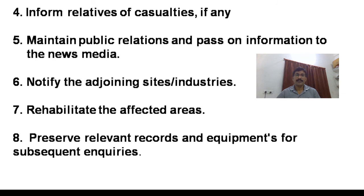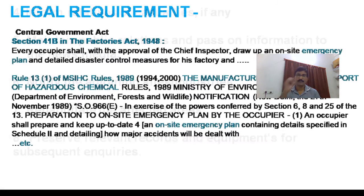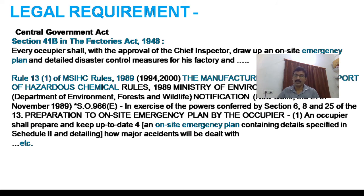7. Notify the adjoining sites or industries. 8. Rehabilitate the affected areas. 9. Preserve relevant records and equipment for subsequent inquiries. Legally, it is also made compulsory for industries to have an emergency plan according to Section 41B of the Factories Act 1948, Rule 13, Clause 1 of the Manufacture, Storage and Import of Hazardous Chemical Rules 1989, etc.